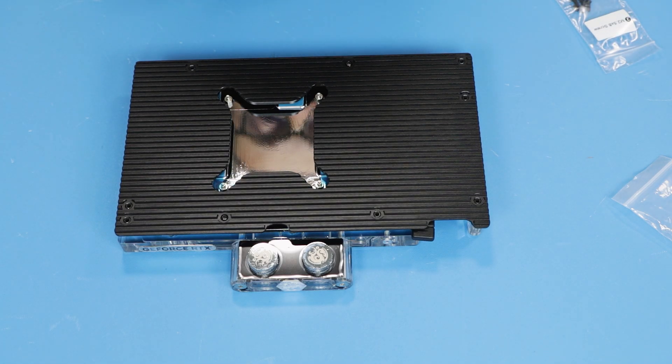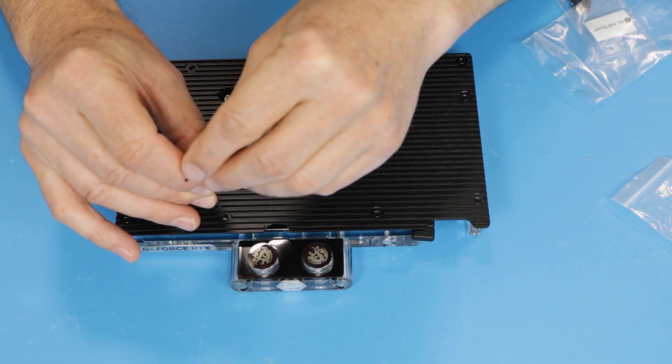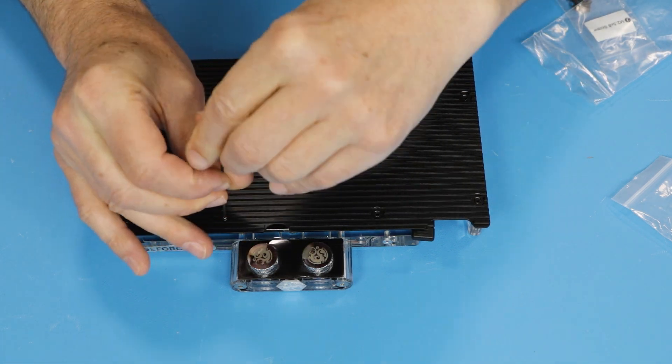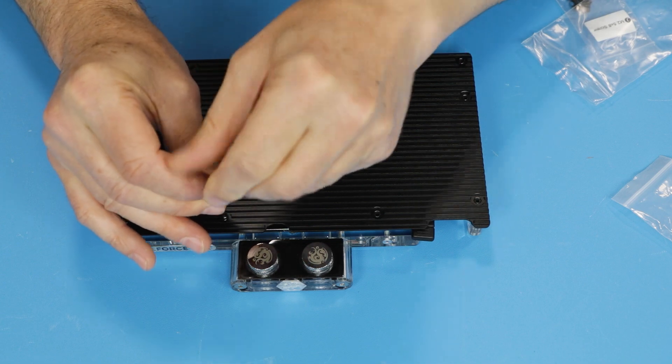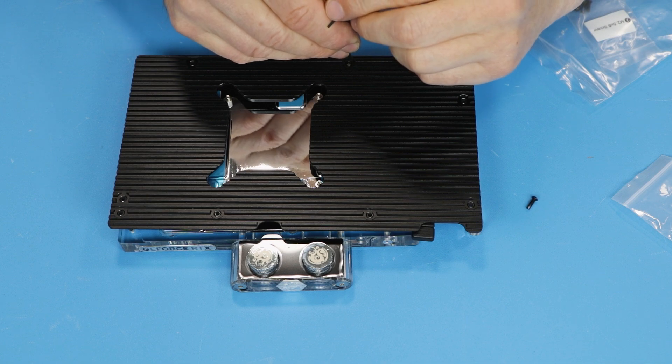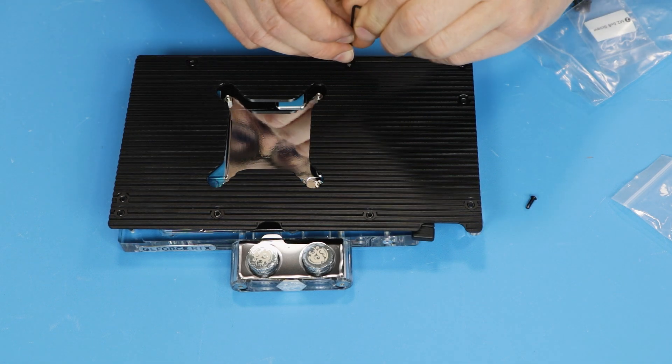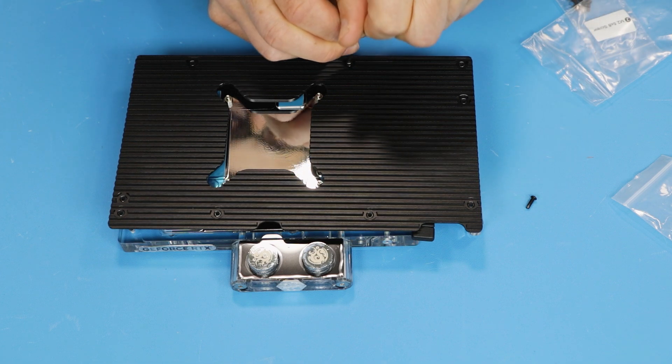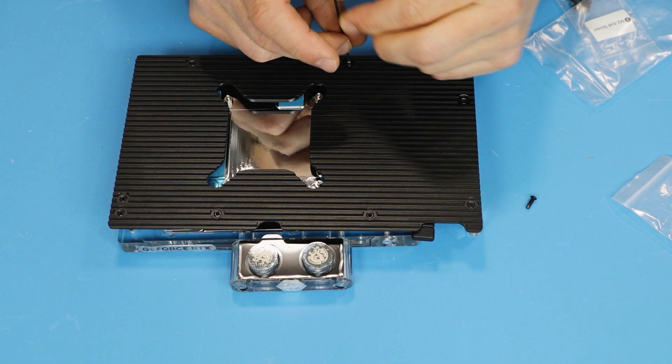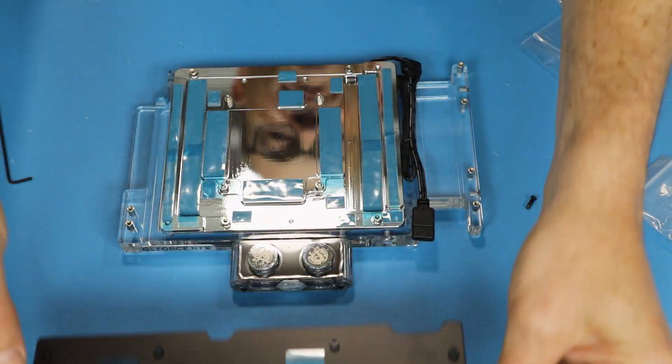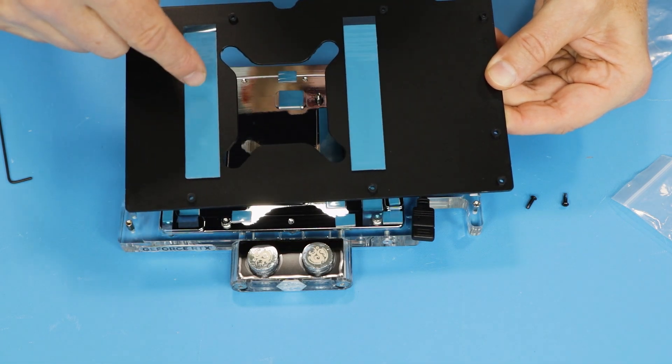Let's open it up. Traditionally for GPU blocks, we have the backplate attached to the block so it's safe for transportation. Here actually it's only two screws. Wow, I thought it would be at least three. So this seems like a minimalistic type of design. And here we go.